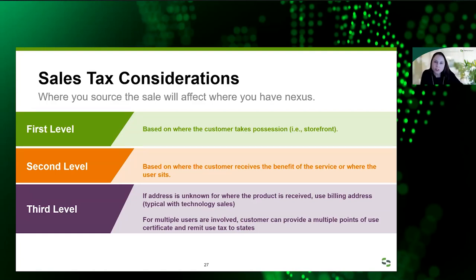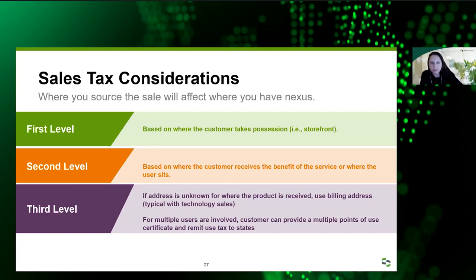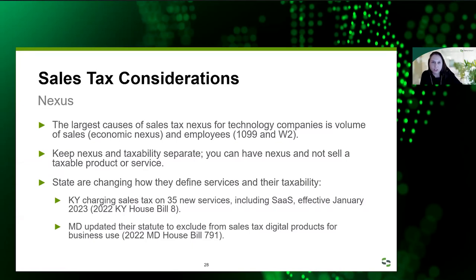For sales tax sourcing of technology, where do you source something without a physical product? Most states use a basic waterfall approach. The first level is based on where the customer takes possession of the item — for example, at a storefront. The second level is based on where the customer receives the benefit of the service or where the user sits. The third is: if the address is unknown, use the billing address. For multiple users, the customer can provide a Multiple Points of Use (MPU) certificate and remit use tax to the states based on where users are located.